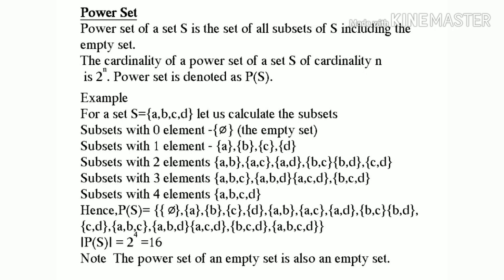Subset with 1 element: {A}, {B}, {C}, {D}. Subset with 2 elements: {A,B}, {A,C}, {A,D}, {B,C}, {B,D}, {C,D}. Subset with 3 elements: {A,B,C}, {A,B,D}, {A,C,D}, {B,C,D}. Subsets with 4 elements: {A,B,C,D}.